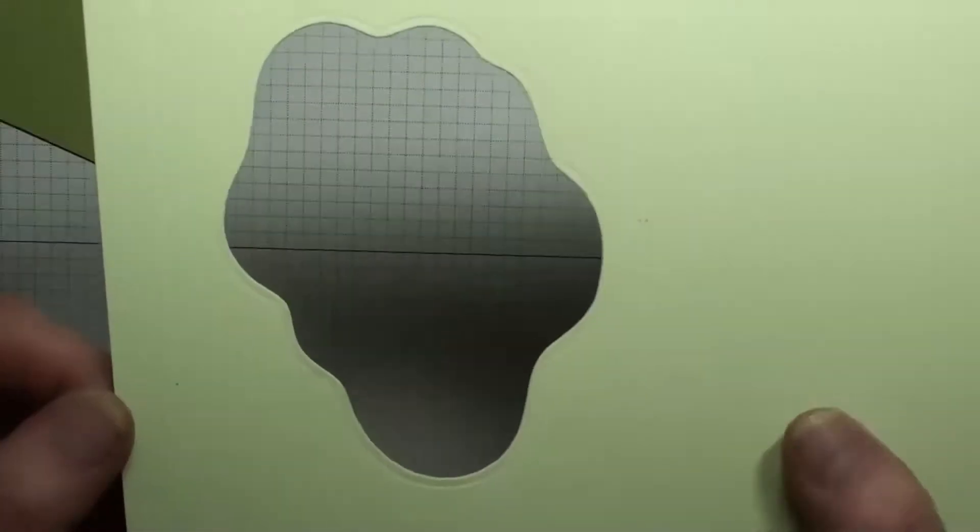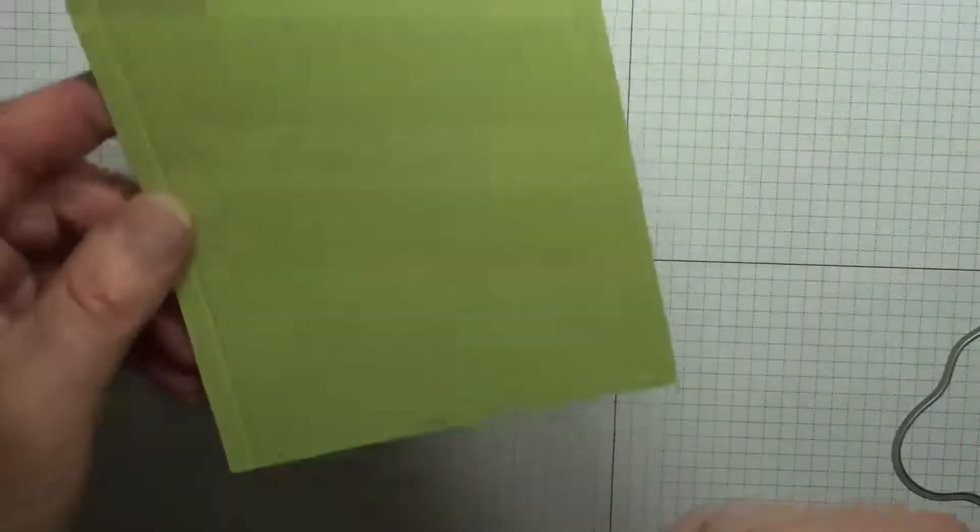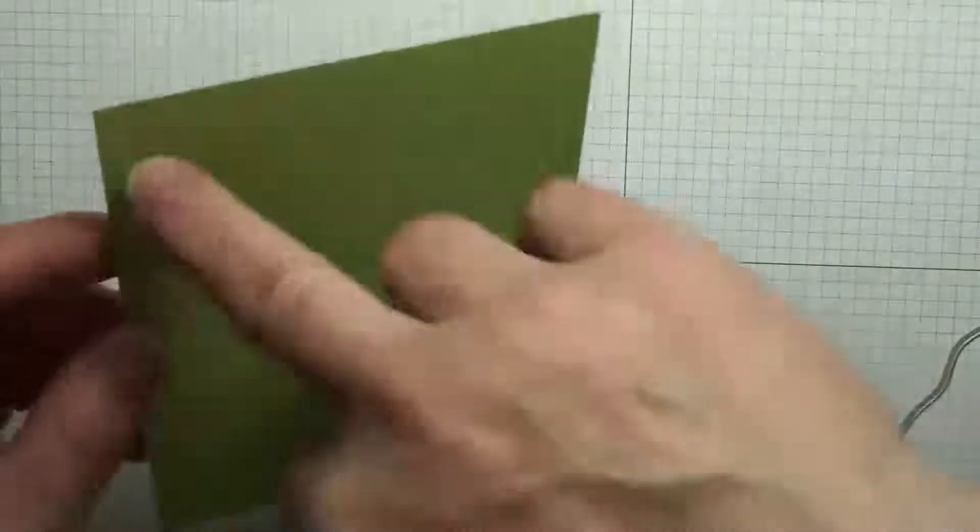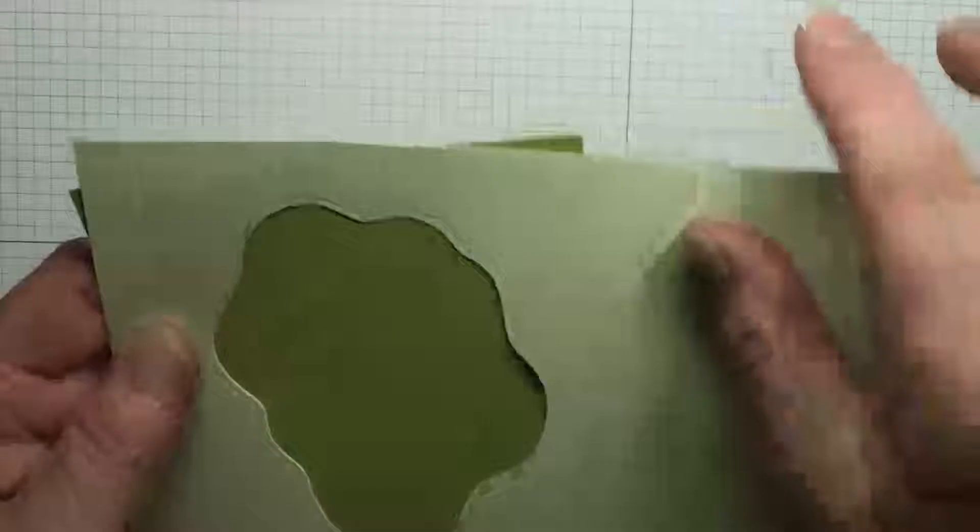Okay, so now I have this. You can see I've cut it out between the two score lines. Now I'm going to take this piece that I scored at a quarter inch on both sides, and I'm going to line each one of these quarter inch score lines up with this score line and this score line.